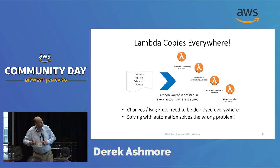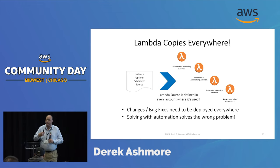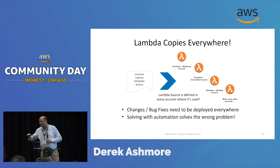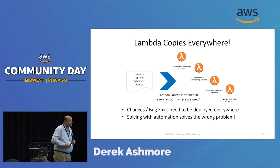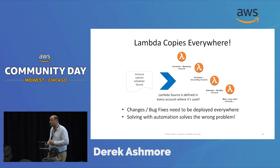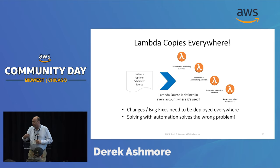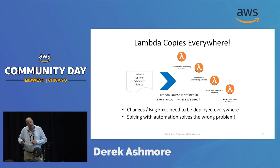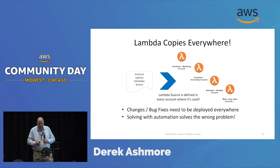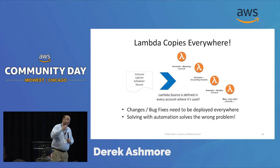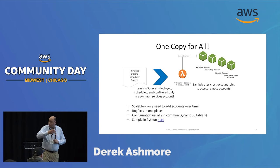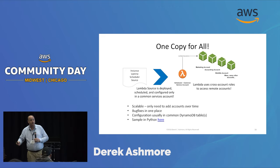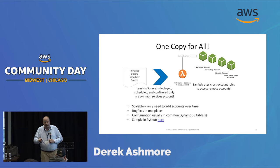Here's a tale from the field: somebody will create a useful general-purpose lambda and deploy it on every AWS account they have. I had an insurance client last year with 70-some AWS accounts, and those utility lambdas had 70 copies, one per account. That's a problem — if you want to change that lambda, you need to deploy it 70 times. You can automate that, but I think that's solving the wrong problem.